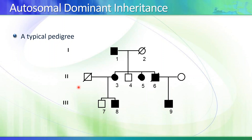For autosomal dominant inheritance, you can see in the pedigree that the phenotype appears in every single generation — whereas with autosomal recessive disorders the disease is clustered within a family. The Roman numerals in a pedigree indicate generations: generation I, generation II, generation III, etc. An individual might be referred to as I-1, meaning individual 1 of generation 1.